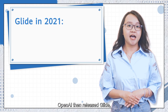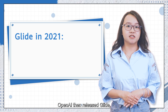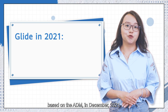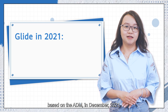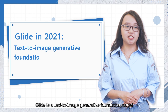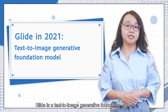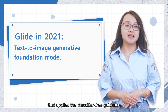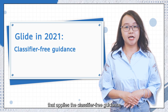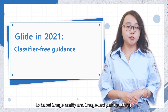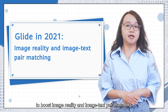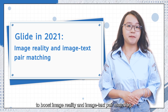OpenAI then released GLIDE, based on ADM, in December 2021. GLIDE is a text-to-image generative foundation model that applies classifier-free guidance to boost image realism and image-text pair matching.